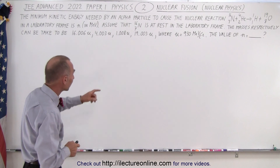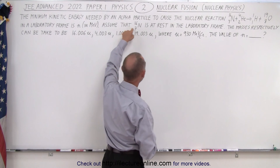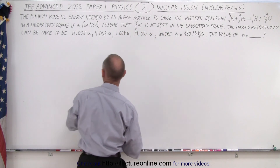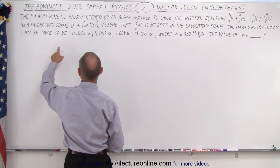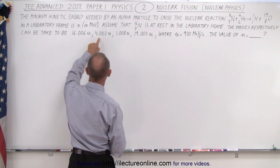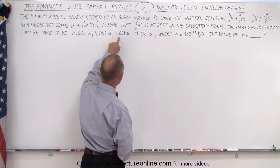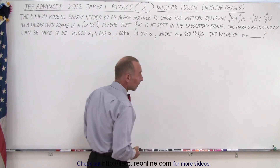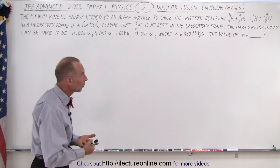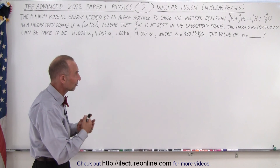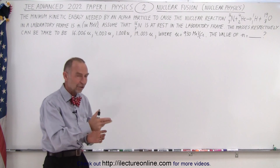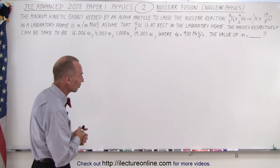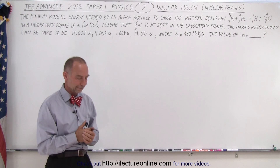Assume that nitrogen-16/7 is at rest in the laboratory frame. The masses respectively can be taken to be 16.006, 4.003, 1.008, and 19.003 atomic mass units, where U is equivalent to 930 MeV per c-squared. We are looking for the value of N.